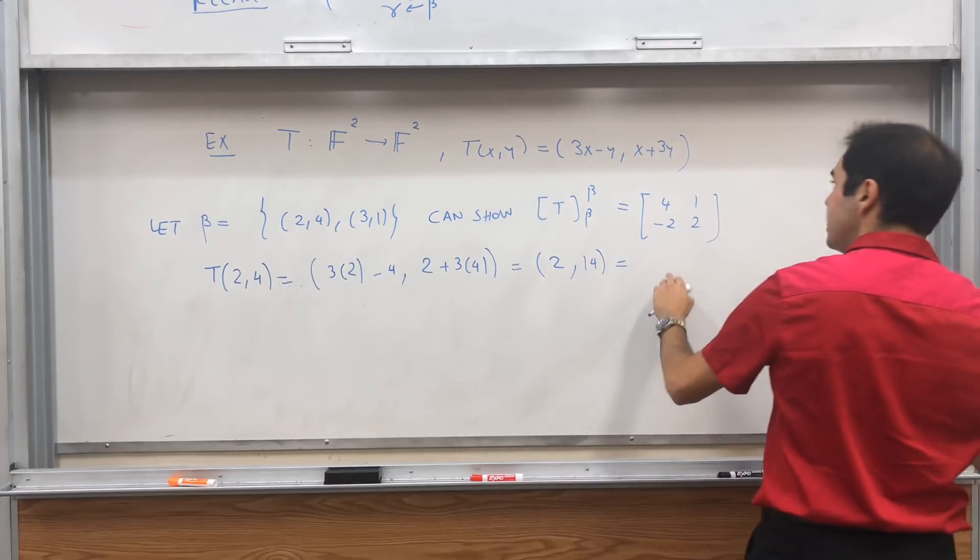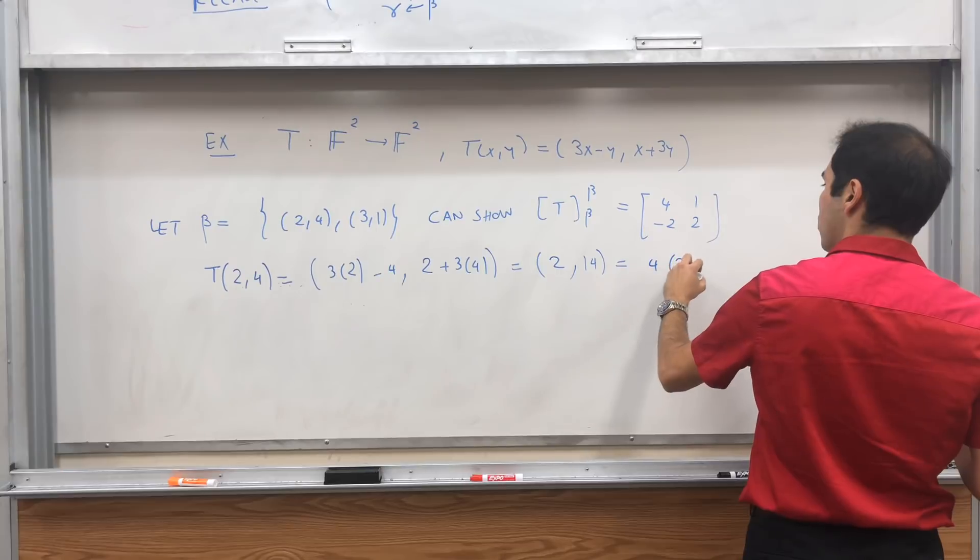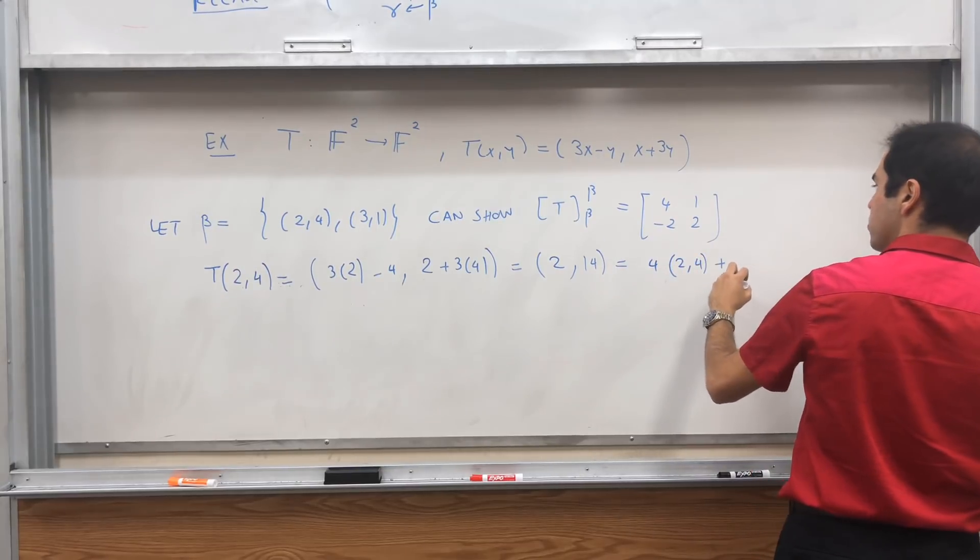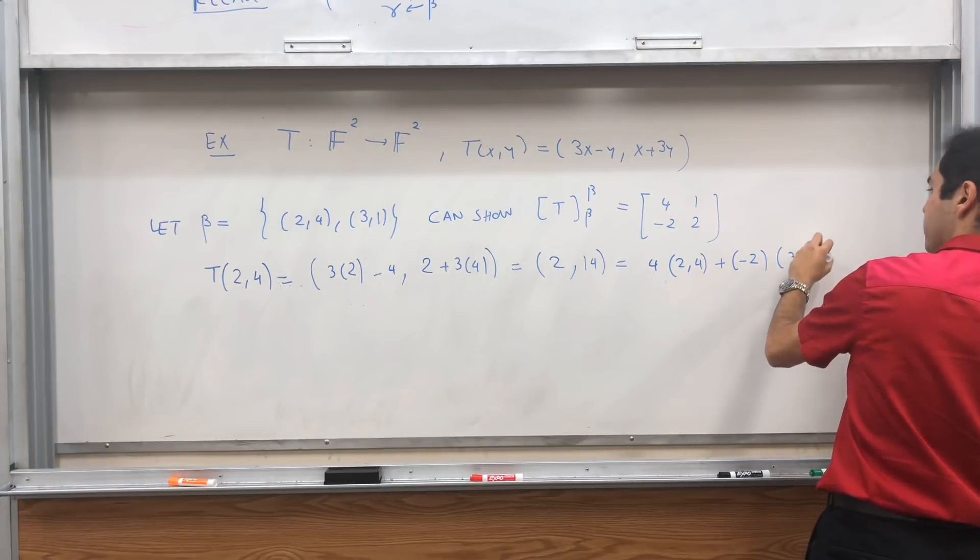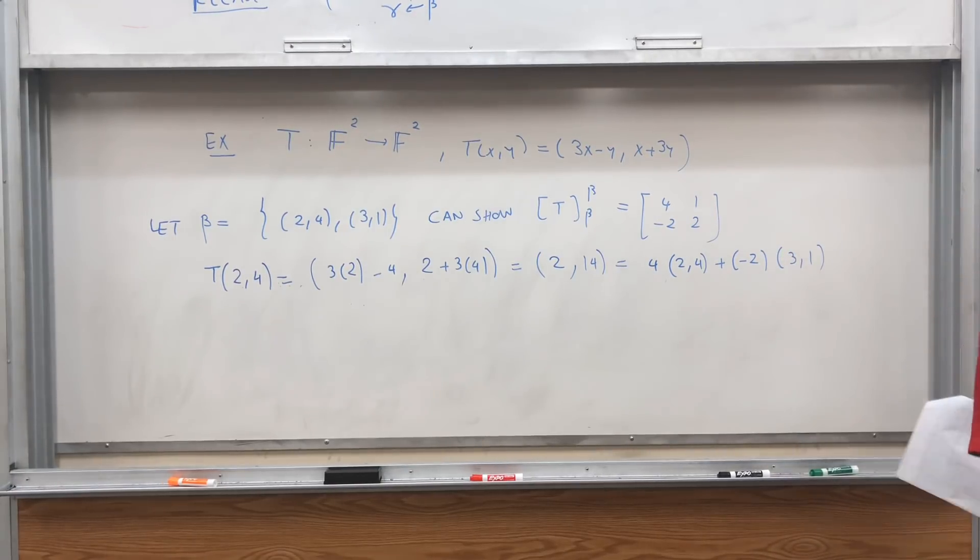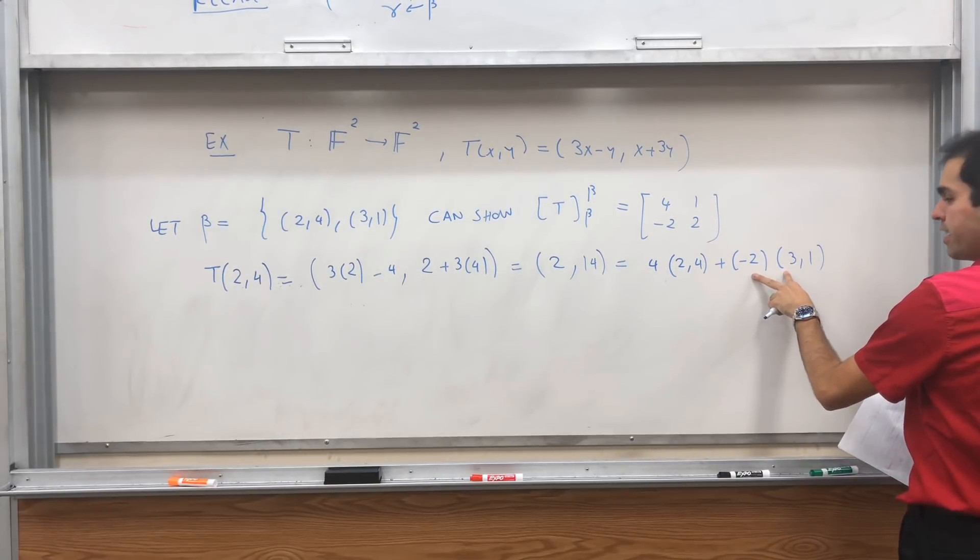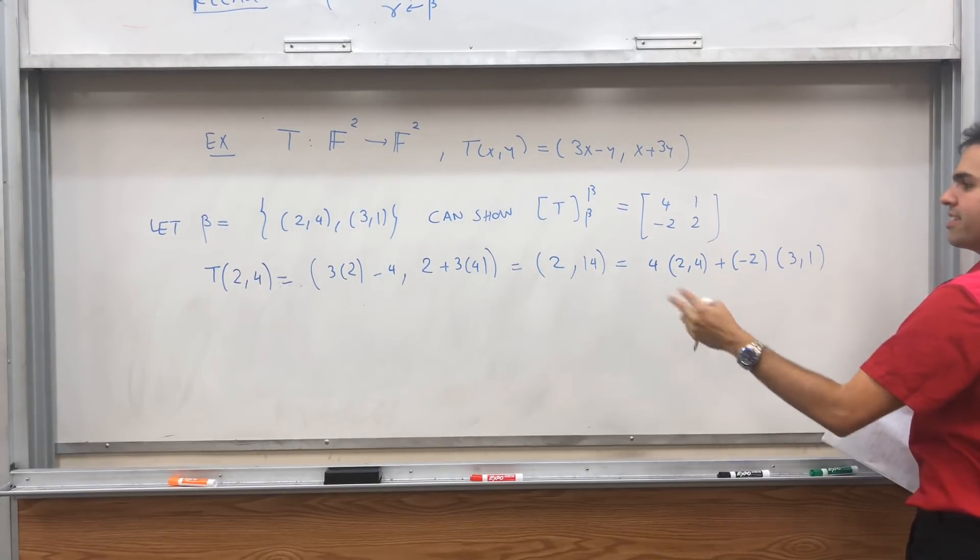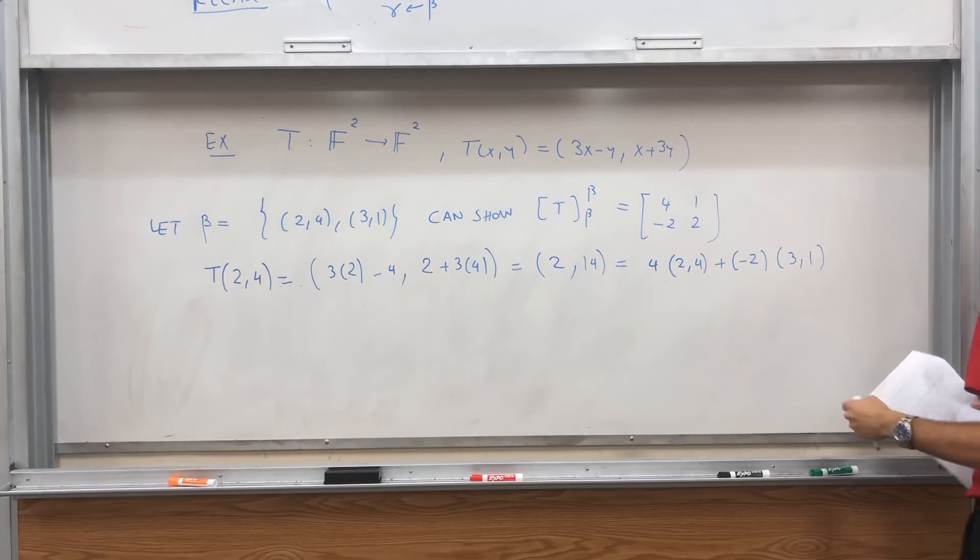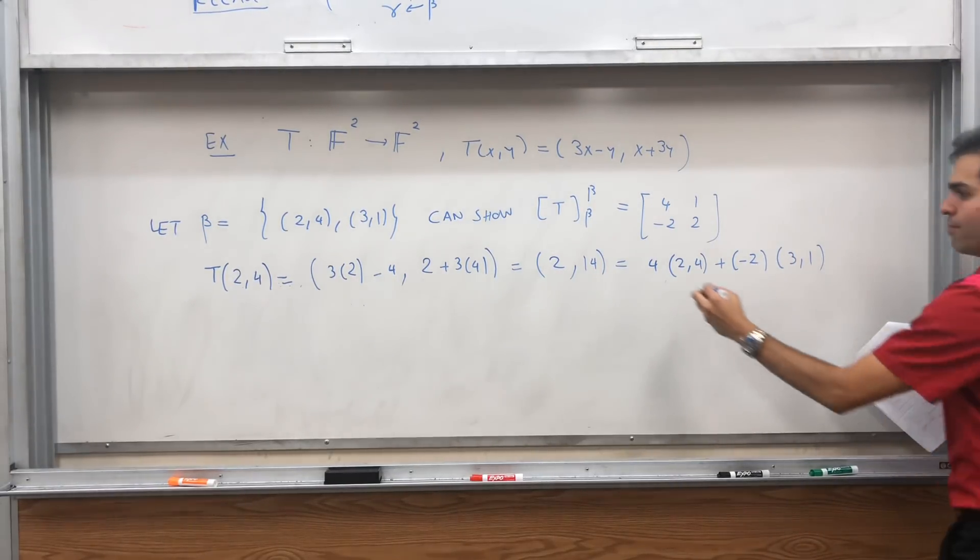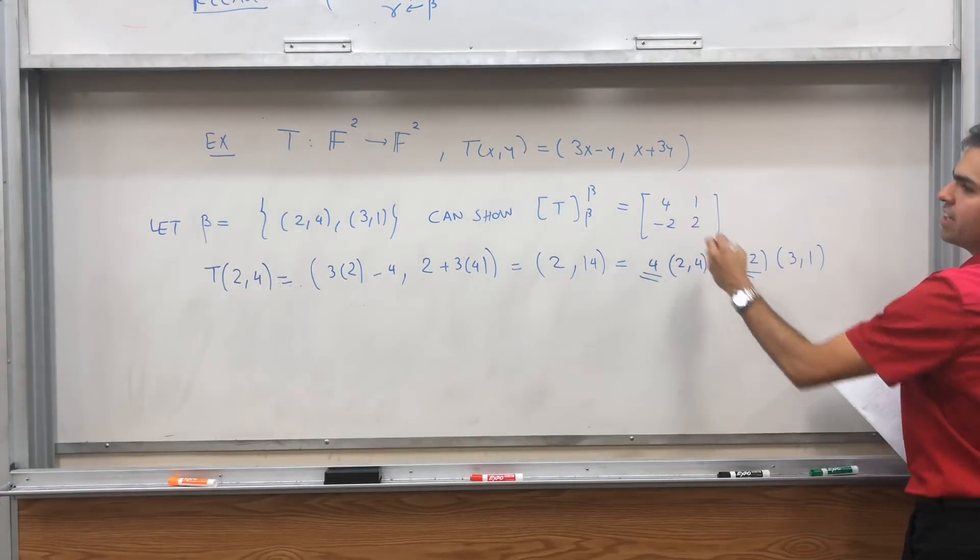And you can indeed check that it's equal to 4 times (2,4) plus -2 times (3,1). And indeed, 4 times 2 is 8, minus 2 times 3 is 6, so 8 minus 6 is 2, and then 4 times 4 is 16, minus 2 times 1 is 14. And what this tells you is the first column of your matrix is 4, -2.